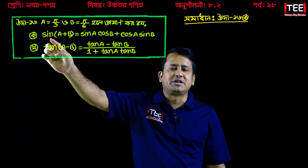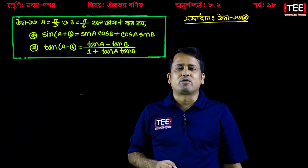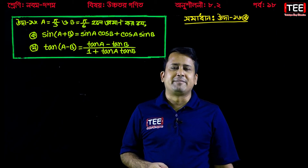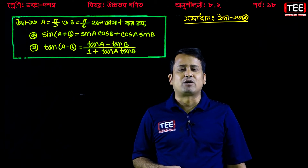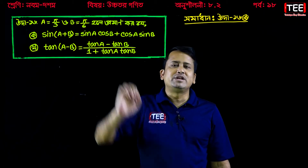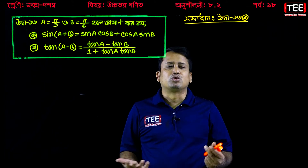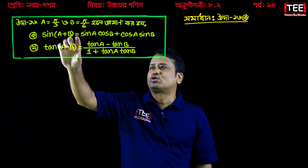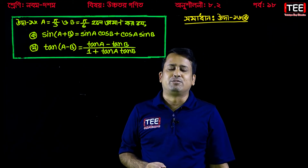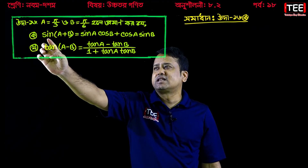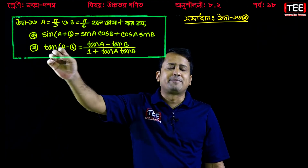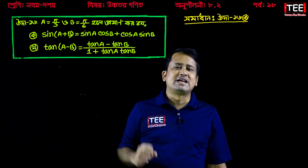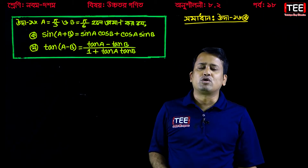If you look at sin(a+b), it equals sin a cos b plus cos a sin b. And sin(a-b) equals tan a minus tan b, divided by 1 plus tan a · tan b. These are two types of sutra (formulas).